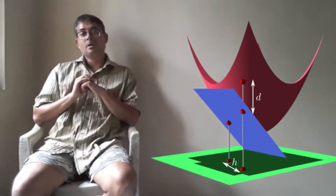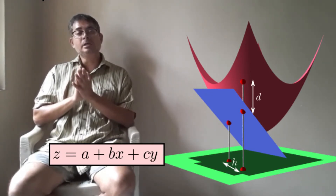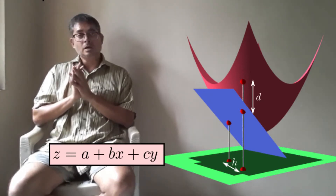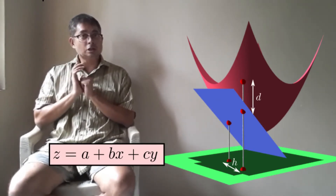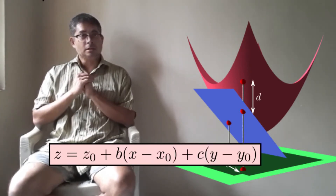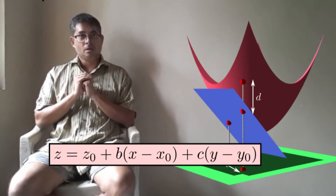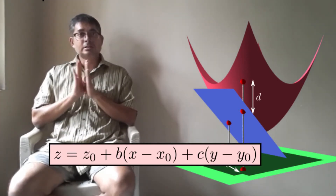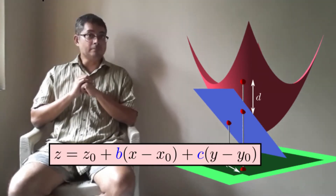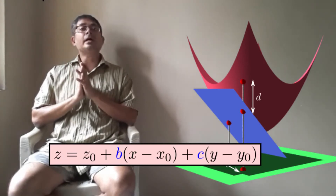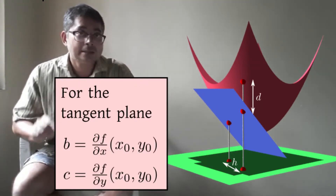Now any plane has an equation of the type z = a + bx + cy. If you take this plane to pass through a particular point x₀, y₀, z₀, the equation will be of that form. Such a plane is given by two slopes: the coefficient of (x − x₀) and the coefficient of (y − y₀). It turns out that these two slopes are precisely the partial derivatives of f at that point x₀, y₀.